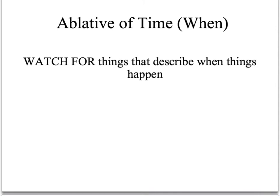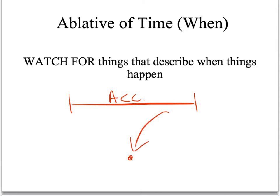The next use of the ablative that often trips people up is the ablative of time when. Whenever we're thinking about space or time: the accusative case is used to talk about duration — for 100 years, for 10 miles — while the ablative is used to talk about a point in space or time, like at 6 o'clock or at a certain place. So watch out for things that describe when things occur; that's a clue that you need the ablative of time when.